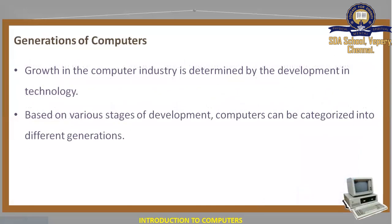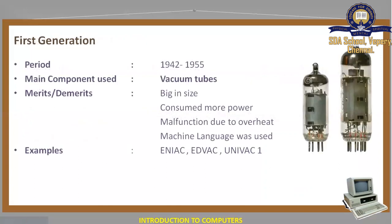Now, generations of computers. What is the meaning of a 'generation' here? It refers to major developments in electronic data processing. Based on various stages of development, computers are categorized into different generations. In your book, they have been categorized into a total of six generations.